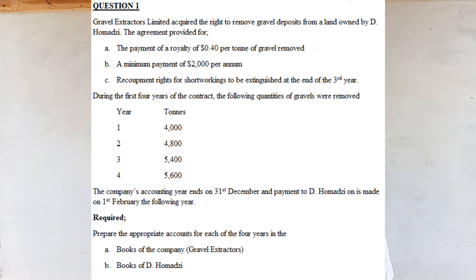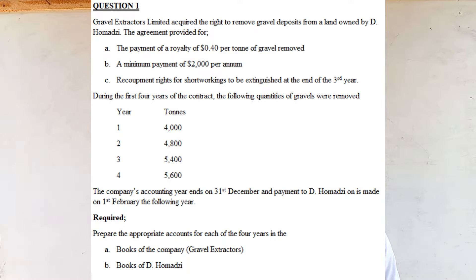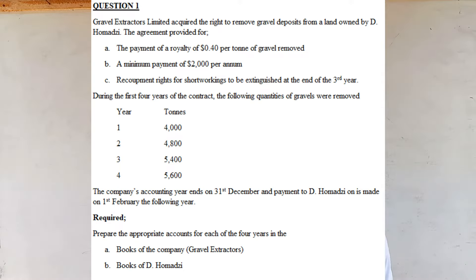The company's accounting year ends on 31 December and payment to de-Homaji is made on 1 February the following year. We are required to prepare the appropriate accounts for each of the four years in: A, the books of the company; B, the books of de-Homaji.